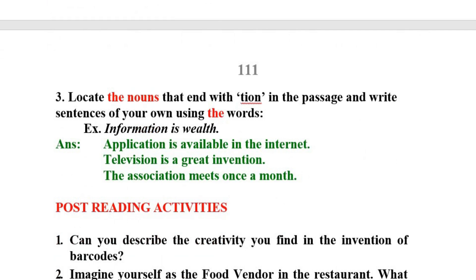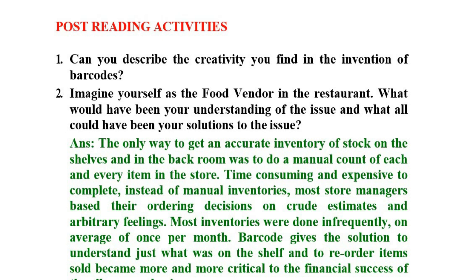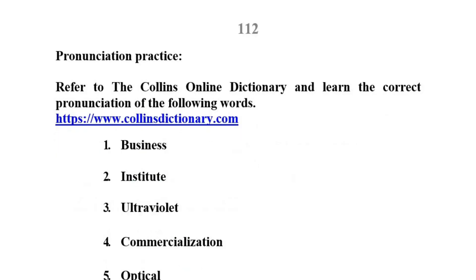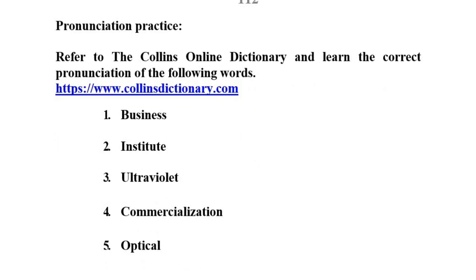Third question: Locate the nouns that end with '-tion' in the passage and create sentences. Examples: Application is available on the internet. Television is a great invention. The association meets once a month. Pronunciation practice words: business, institute, ultraviolet, commercialization, and optical.